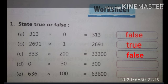Now the next question, when 0 is multiplied by 30 is equal to 300. Children, it will be false. Because when we multiply any number by 0 we get 0 as a product.